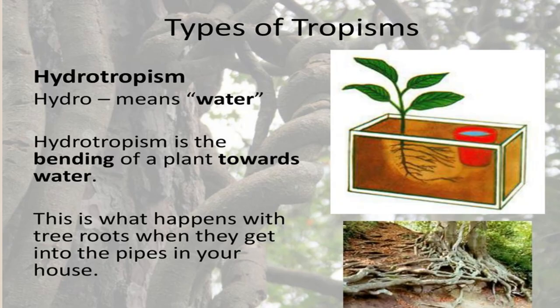Hydrotropism is a growth response to the stimulus of water. Stems grow away from water and are negatively hydrotropic, while roots grow towards water and are said to be positively hydrotropic.